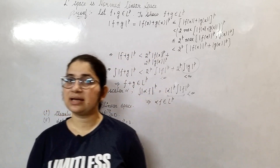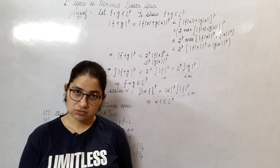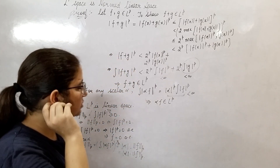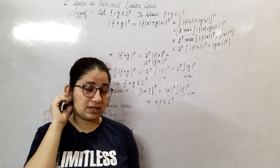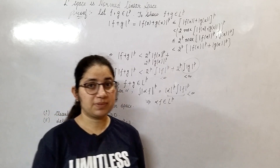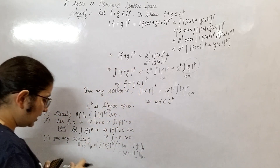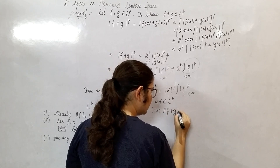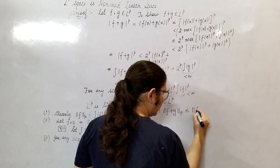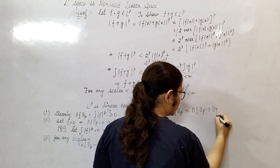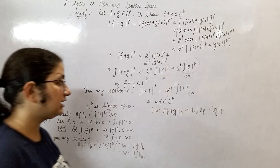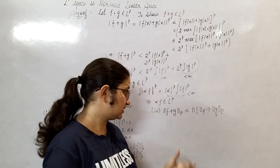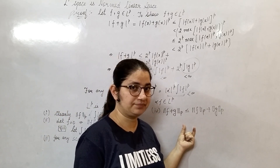The fourth property is the triangle inequality. For the triangle inequality, we will use Minkowski's inequality and Hölder's inequality. Hölder's inequality does not need to be used separately because it is already incorporated in the Minkowski part, but you should know its statement. The triangle inequality states: the norm of f plus g in LP is less than or equal to the norm of f in LP plus the norm of g in LP. This property follows from Minkowski's inequality. Therefore, LP space is a normed linear space.